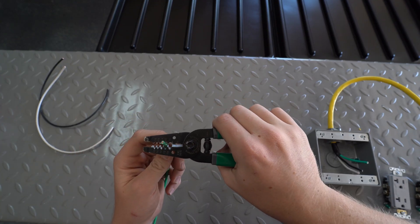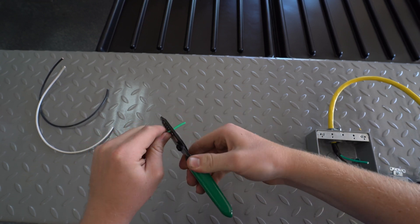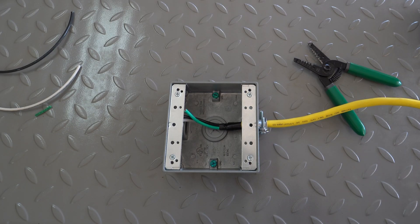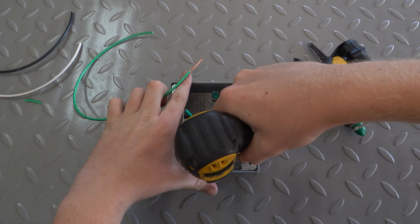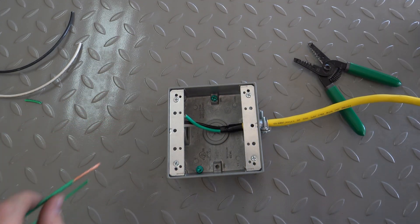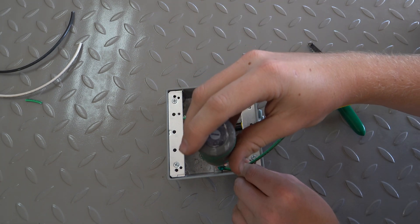Strip a short length of 12 gauge green wire. Inside of the metal junction box, remove the green screw. Loop the green copper wire around the screw and screw it back into place.